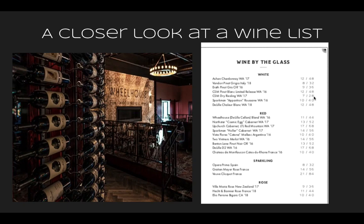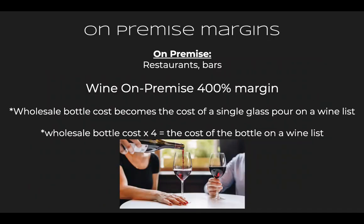The restaurant probably paid about $7 for the entire bottle, which is what you pay for a single glass pour. The bottle on the wine list is $28. They marked it up four times: $6.99 times 4 equals roughly $28. So wholesale bottle cost times four is the cost of the bottle on a wine list. By far, ordering beverages at a restaurant is the highest price you're going to pay — you pay the most money when you buy at a restaurant.